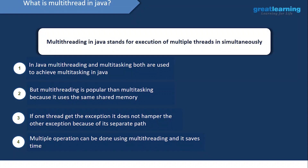Multithreading in Java stands for the execution of multiple threads simultaneously. Both multithreading and multitasking achieve multitasking in Java, but multithreading is more popular because it uses the same shared memory, making programs less costly and more effective. If one thread gets an exception, it does not hamper other threads. Multiple operations can be done using multithreading, saving time and money.